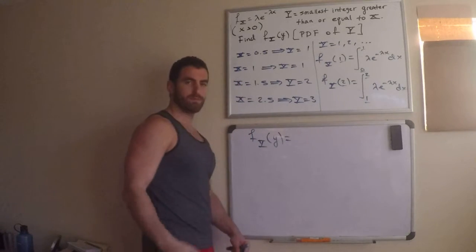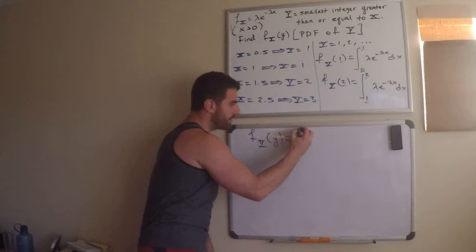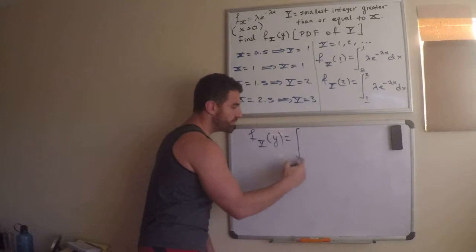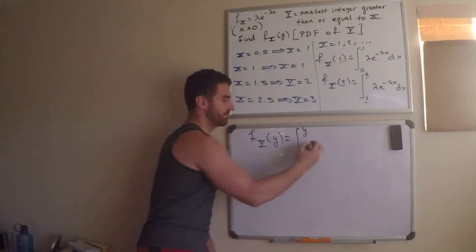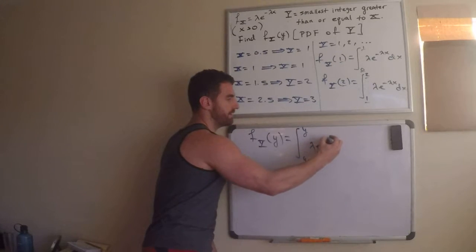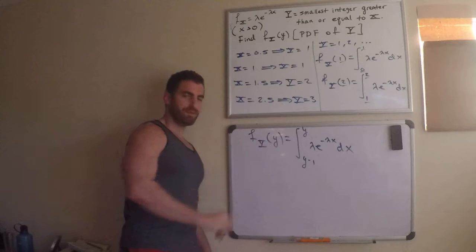This is that number, right? So, I'm looking at the pattern here. If I want the probability that y is equal to y, then this is going to be... Well, this is 1 less y minus 1 to y of the PDF of x. Lambda e to the negative lambda x dx. This will give me the PDF.